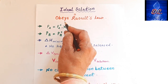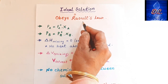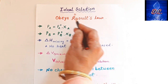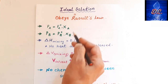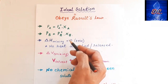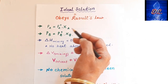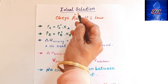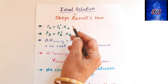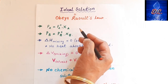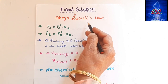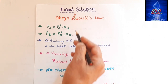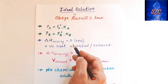All those solutions which obey Raoult's Law at all temperatures and concentrations are called Ideal Solutions. In any temperature, in any concentration, in any solution, if you have characteristics according to Raoult's Law, that means that solution is an Ideal Solution.